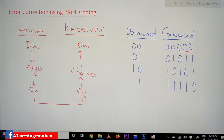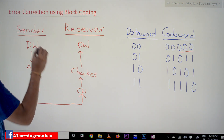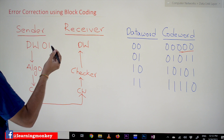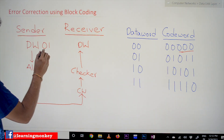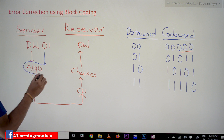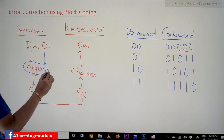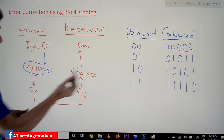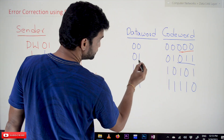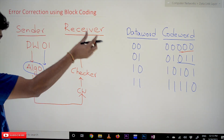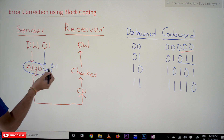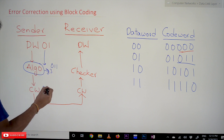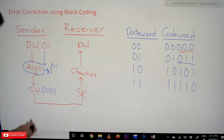These are the corresponding code words for the data words. Now, what are the steps in the process of correcting errors? For example, we want to transmit data word '01'. We provide '01' to the algorithm, and the algorithm is going to produce a 3-bit redundant code. For '01', the redundant bits generated are '011'. So '011' is added to the data word, making the code word '01011', which is then transmitted.